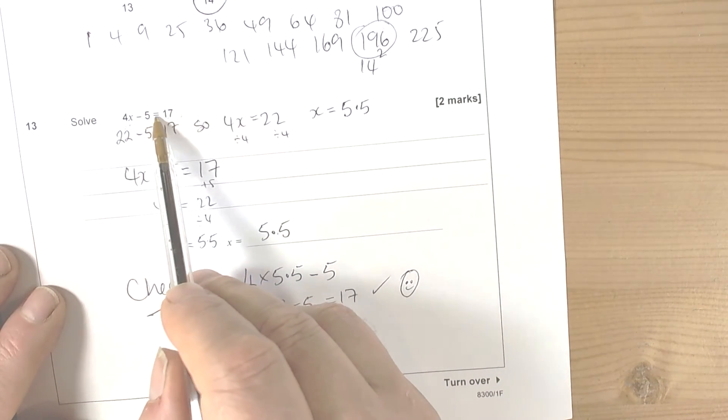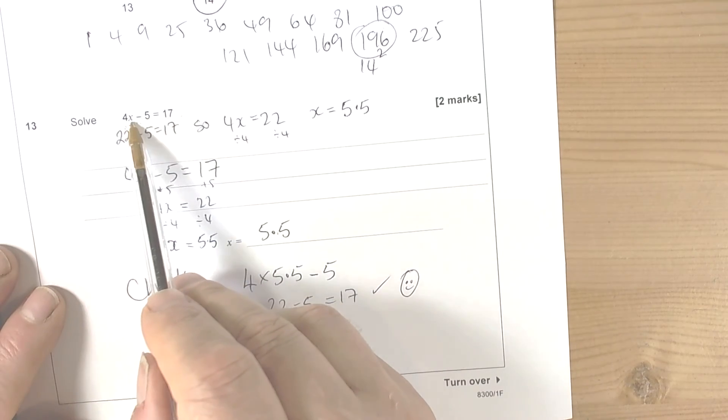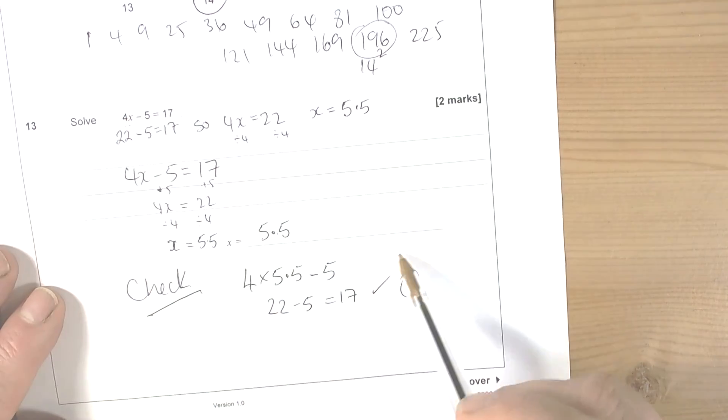Left hand side equals right hand side, that's what the equal sign is telling you. That side's got the same value as that side when x is 5 and a half.